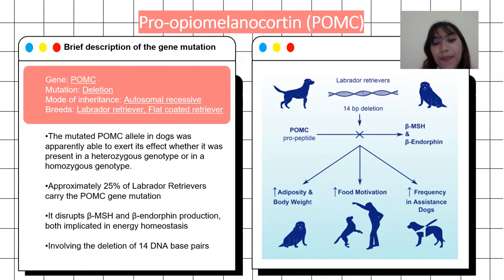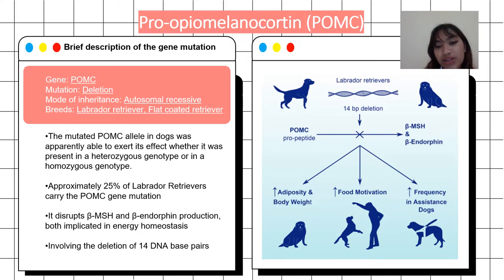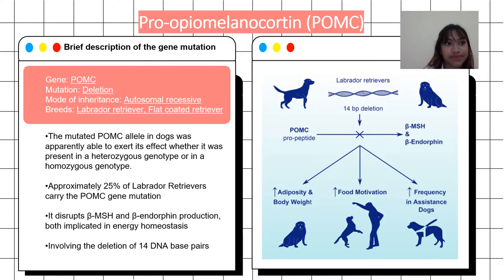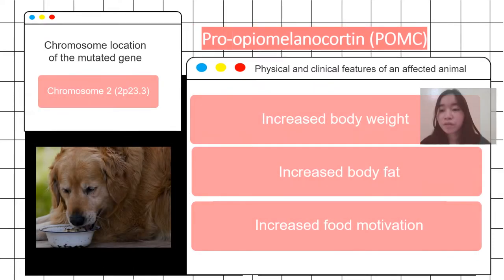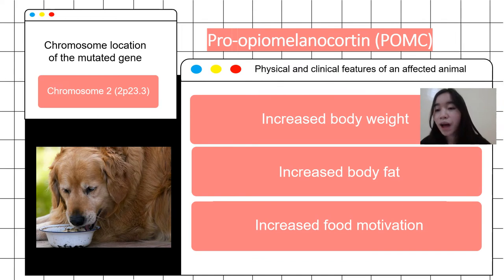In the photo, we can see two Labrador retrievers having a 14-base-pair deletion, resulting in increased body weight, food motivation, and food-seeking behavior in the dog. The mutated gene can be found at position 23.3 on the p-arm, or the short arm, of chromosome 2, where 23 represents the region or band and 3 represents the subband, respectively.